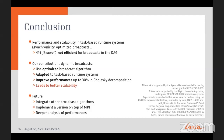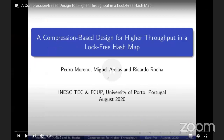To conclude: performance and scalability in task-based runtime systems are achieved through asynchronicity and optimized broadcasts among other things. However, MPI_Bcast is not efficient in our case for handling broadcasts appearing in the DAG. Our dynamic broadcasts contribution is adapted to task-based system requirements and uses an optimized broadcast algorithm. According to our benchmark, it improves performance up to 30% in the Cholesky decomposition, leading to better scalability. For future work, we would like to integrate other broadcast algorithms such as binary trees and pipeline trees, implement a version on top of MPI, and perform a deeper analysis of obtained performance. Thank you for your attention.